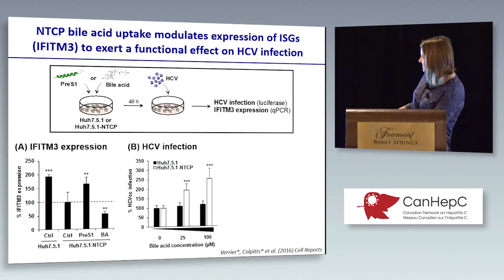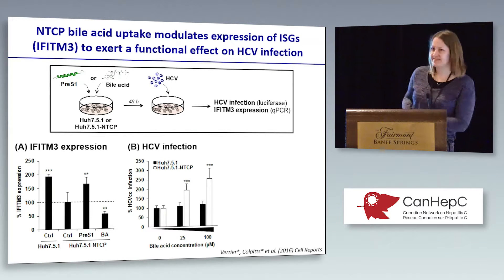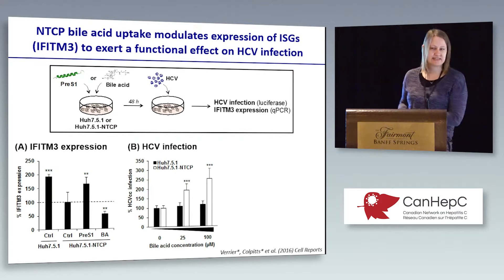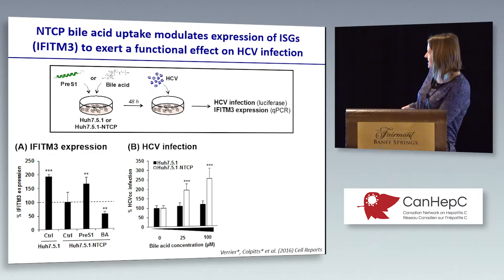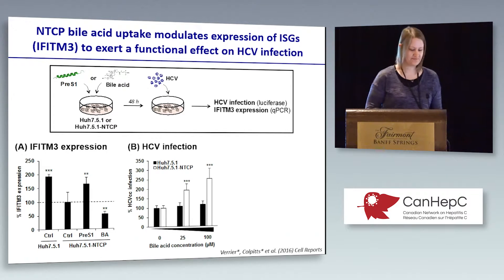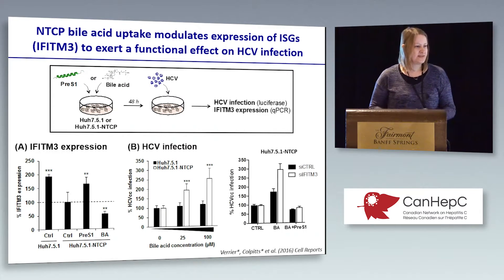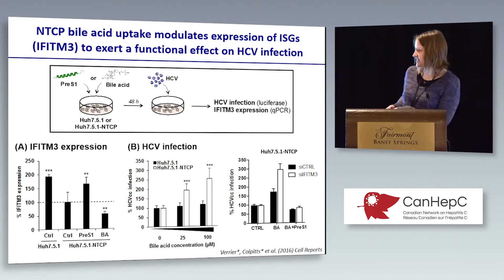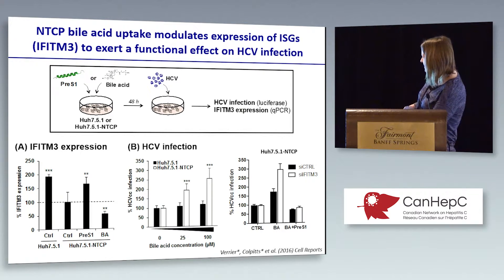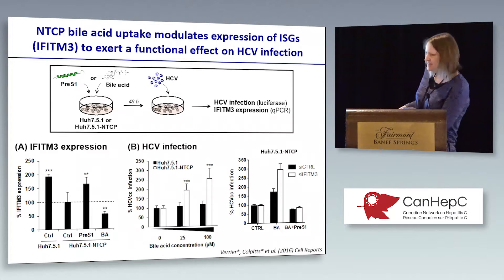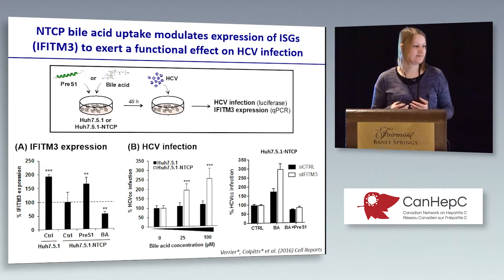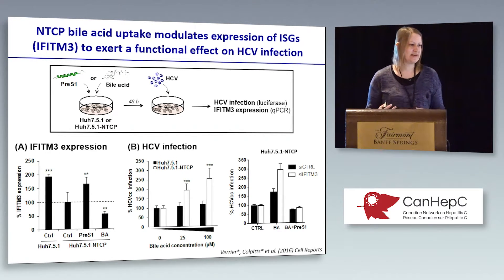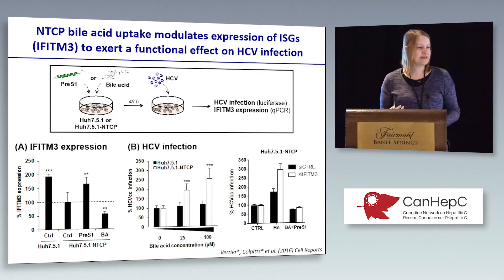By adding bile acids, we see a dose-dependent increase in HCV infection in the NTCP-expressing cells, which we did not see for the parental cell line without NTCP. Furthermore, in the presence of bile acid, silencing IFITM3 using siRNA produces a further enhancement of HCV infection. We did not see this in the absence of bile acid, and we think that's because other ISGs can compensate for IFITM3 deficiency.